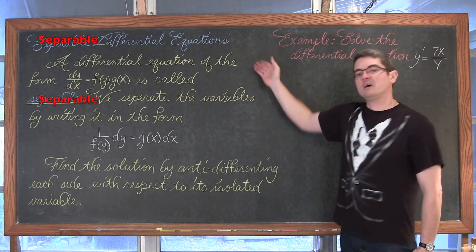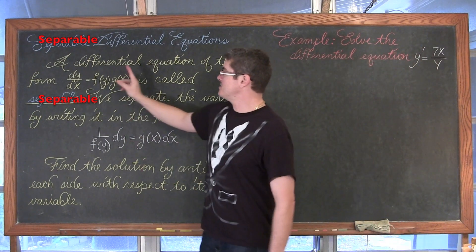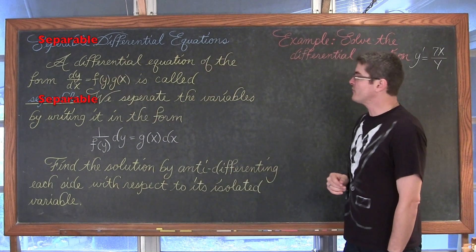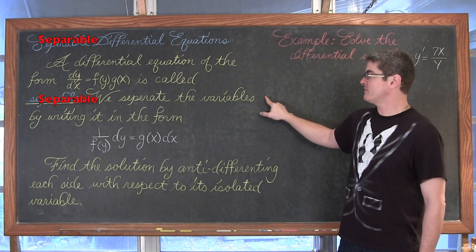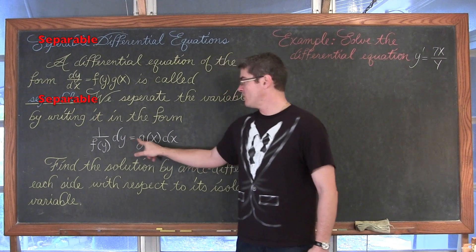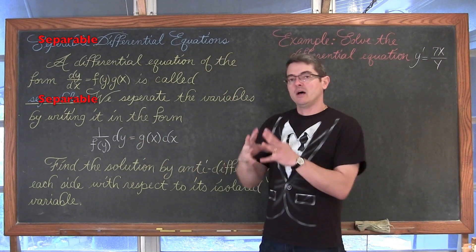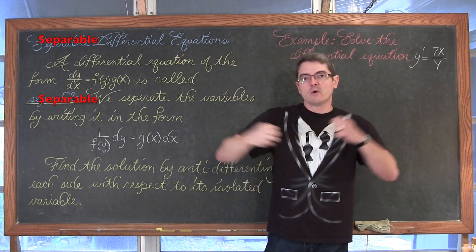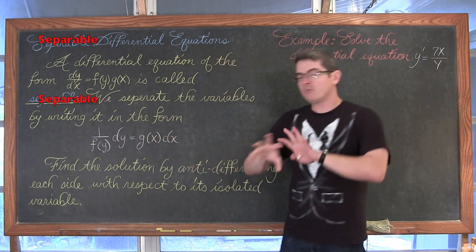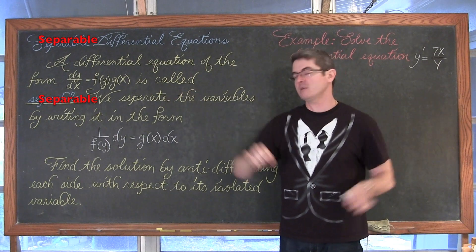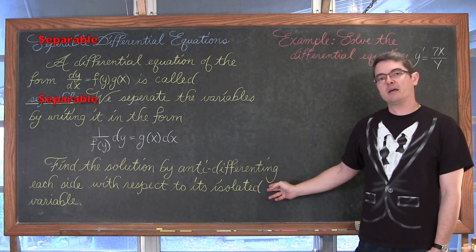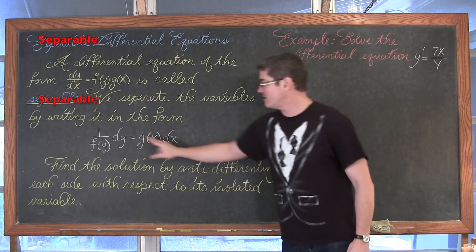A differential equation of the form dy/dx equals f times g is called a separable differential equation. We will separate the variables by writing it in the form 1 over f(y) dy equals g dx. In other words, we separate the x and y variables onto opposite sides of the equation, then find the solution by anti-differentiating each side with respect to its isolated variable.